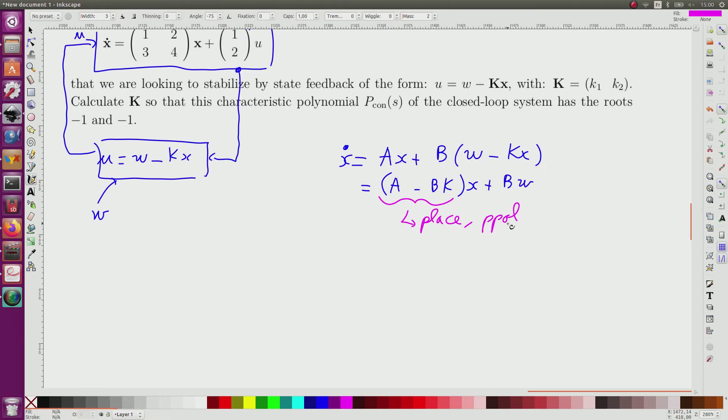So for this I will compute, since the eigenvalues I want are minus 1, minus 1. Then for the controllability of the system I want as a polynomial S plus 1 multiplied by S plus 1, so the roots are minus 1 twice, which is equal to S squared plus 2S plus 1.